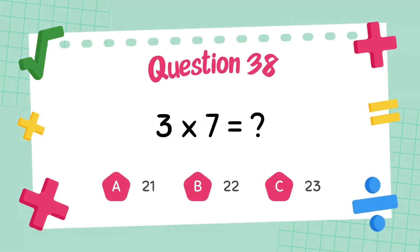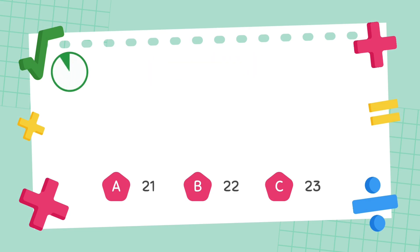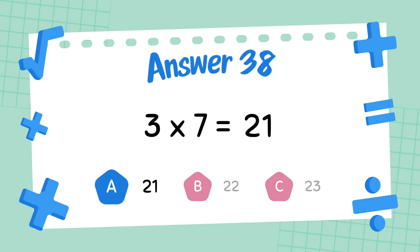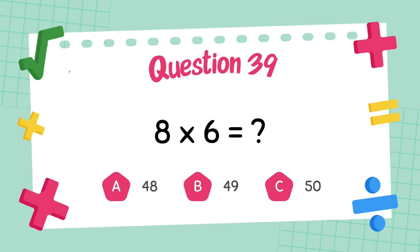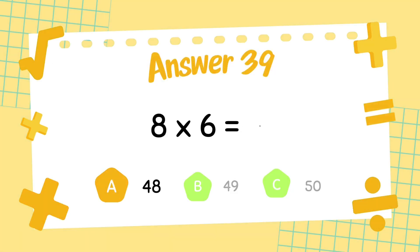What is 3 multiply 7? The answer is 21. What is 8 multiply 6? The answer is 48.